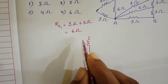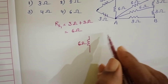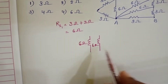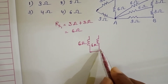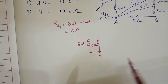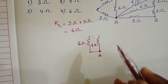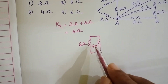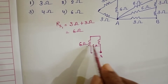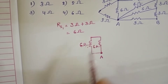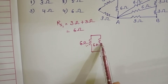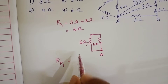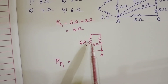So now the circuit has a 6 ohm and again another 6 ohm resistor. This point is A. The remaining circuit is the same — this 6 ohm resistor and this 6 ohm resistor are parallel to each other, directly only two parallel resistors.